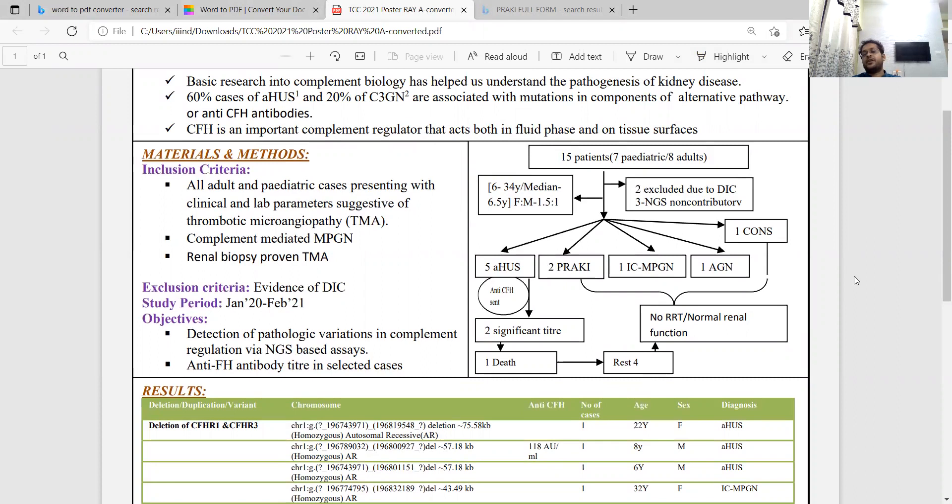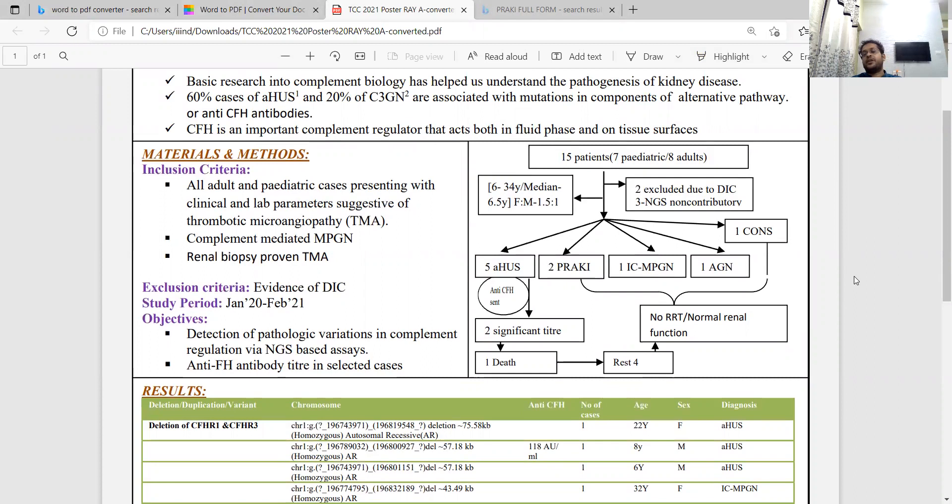Total 15 patients were enrolled and 7 of them were tested. Two patients had to be excluded due to evidence of DIC. NGS came out to be negative in three of them. Among the positive patients, the female to male preponderance was 1.5 to 1, with a median age group of 6.5 years.